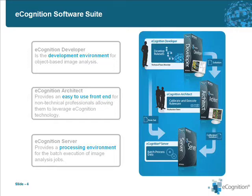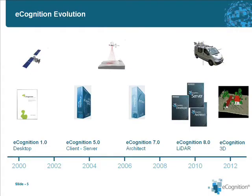If you look at the evolution of the eCognition software, when we released the software in the year 2000, we essentially started to work on airborne data and satellite data exclusively. Over time, we extended the use of data but also extended our software portfolio. And then, when LIDAR became more and more available, we also started using it more widely in our applications, mostly in a rasterized format.